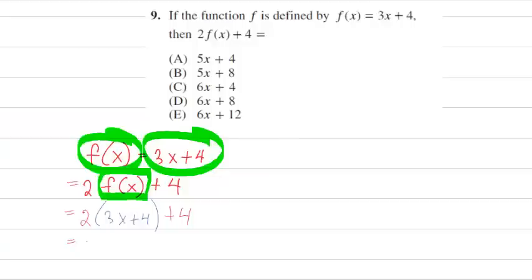2 times 3x is 6x. 2 times 4 is 8. Distributed the 2 there. Plus 4. And altogether, it comes out to 6x plus 12 after we combine our like terms. So the correct answer here would be choice E.